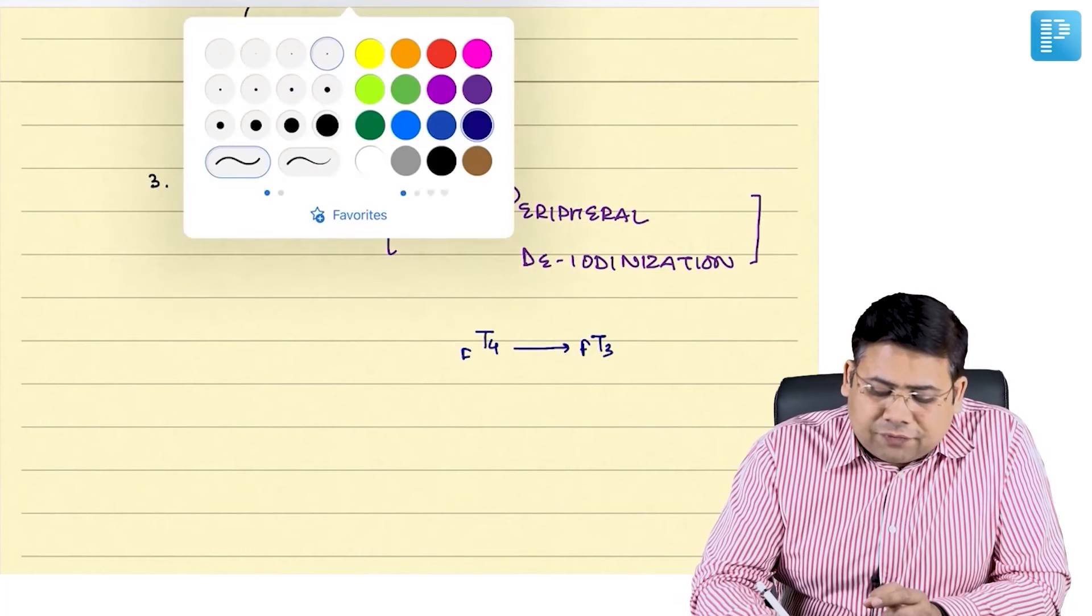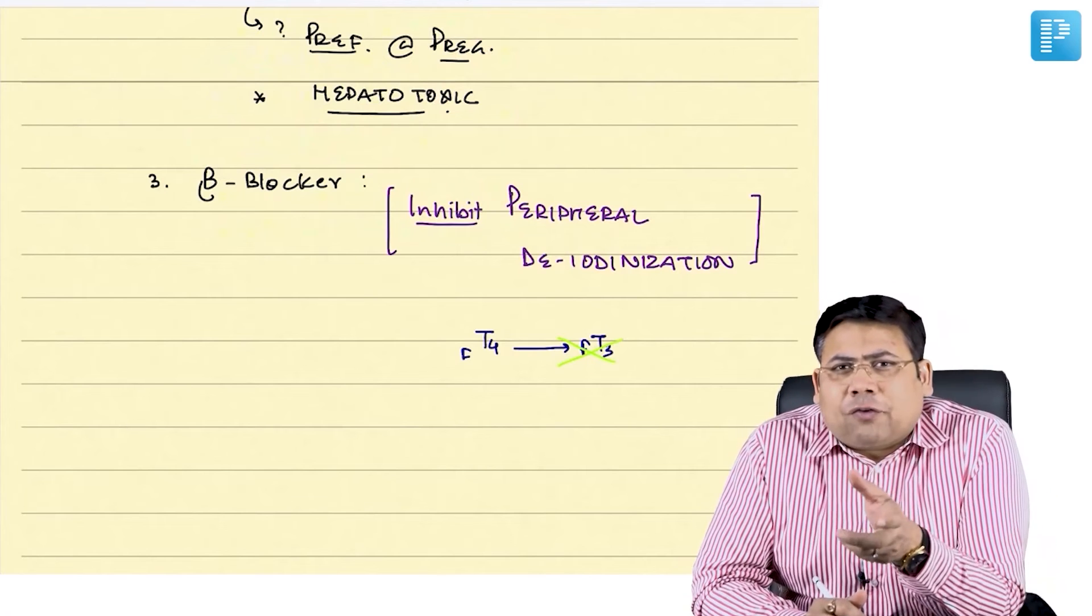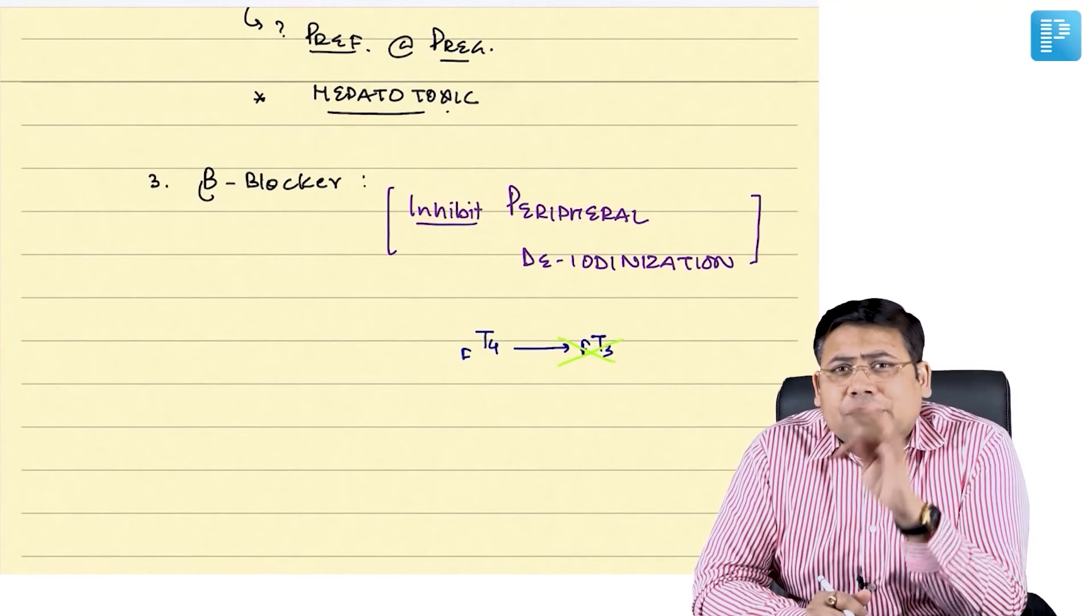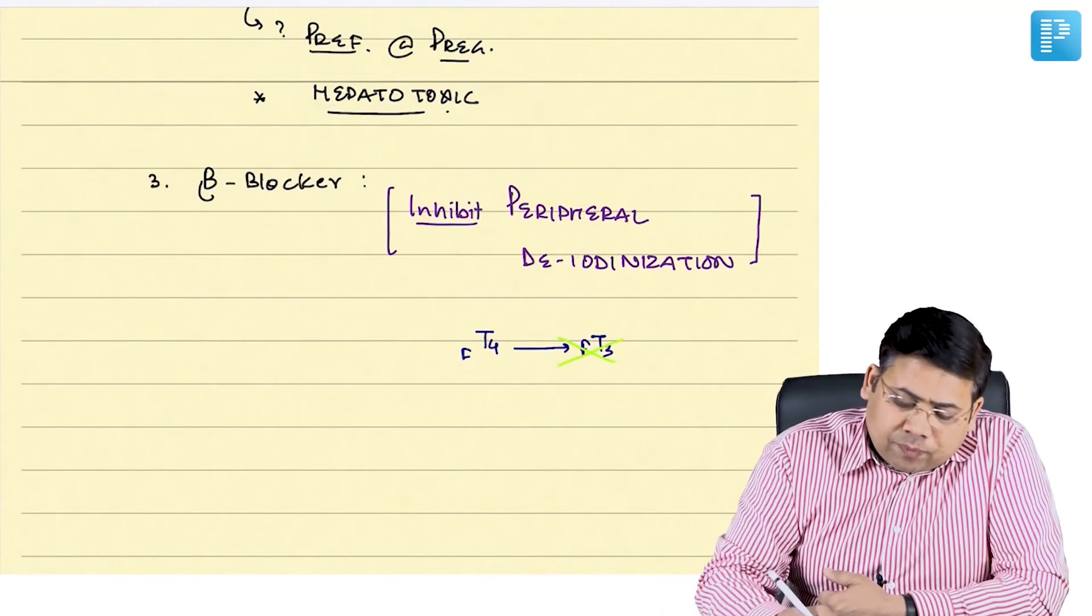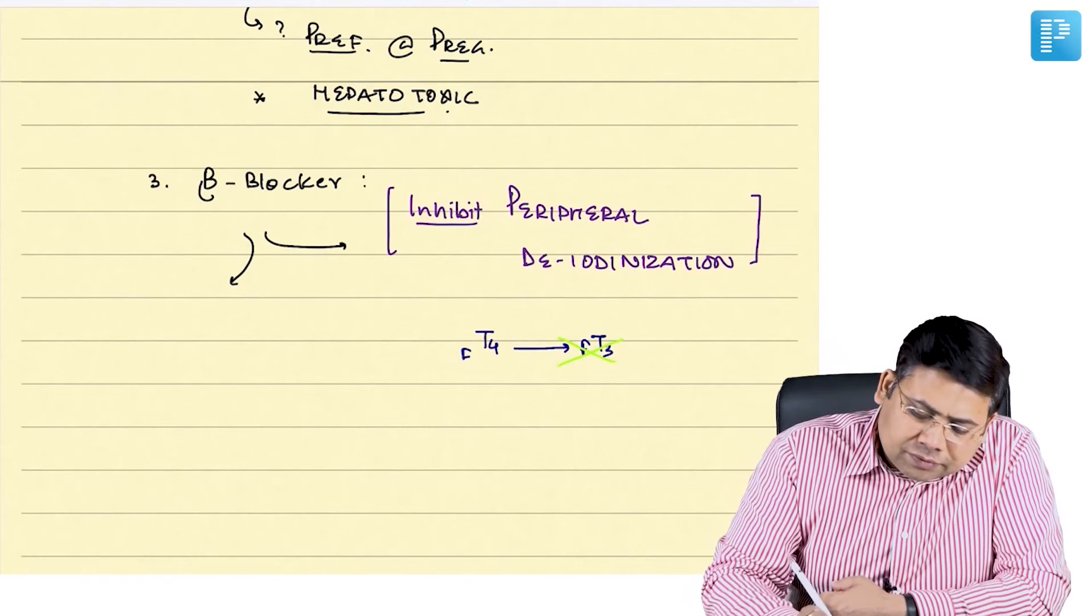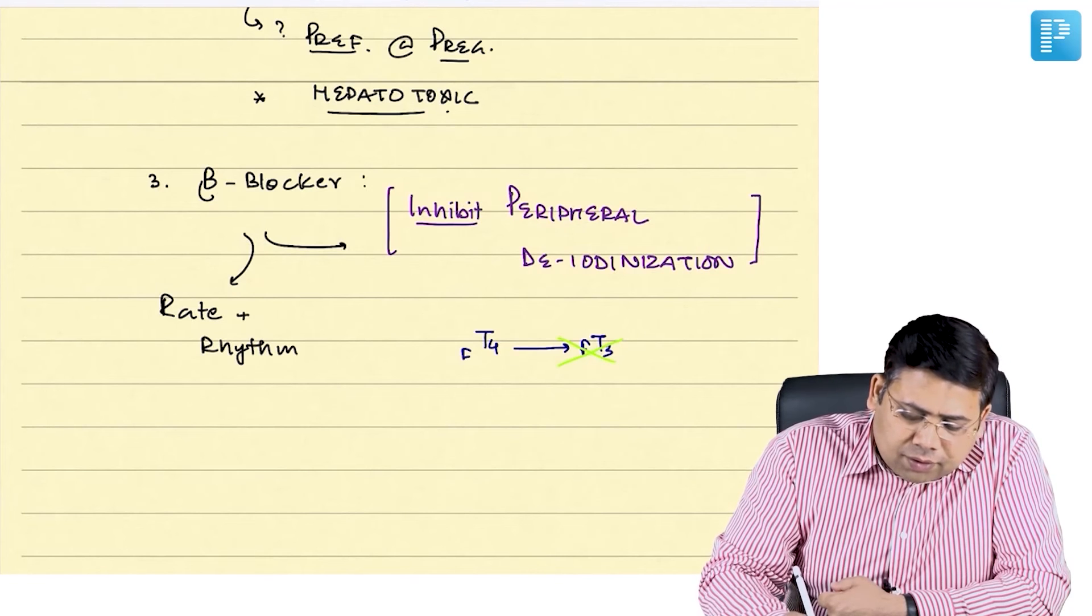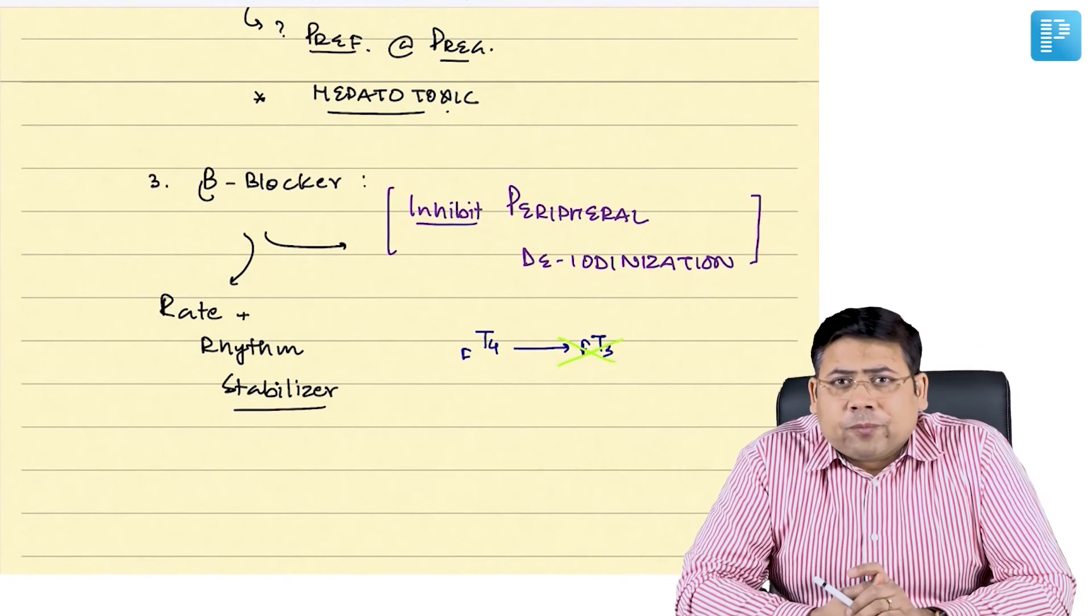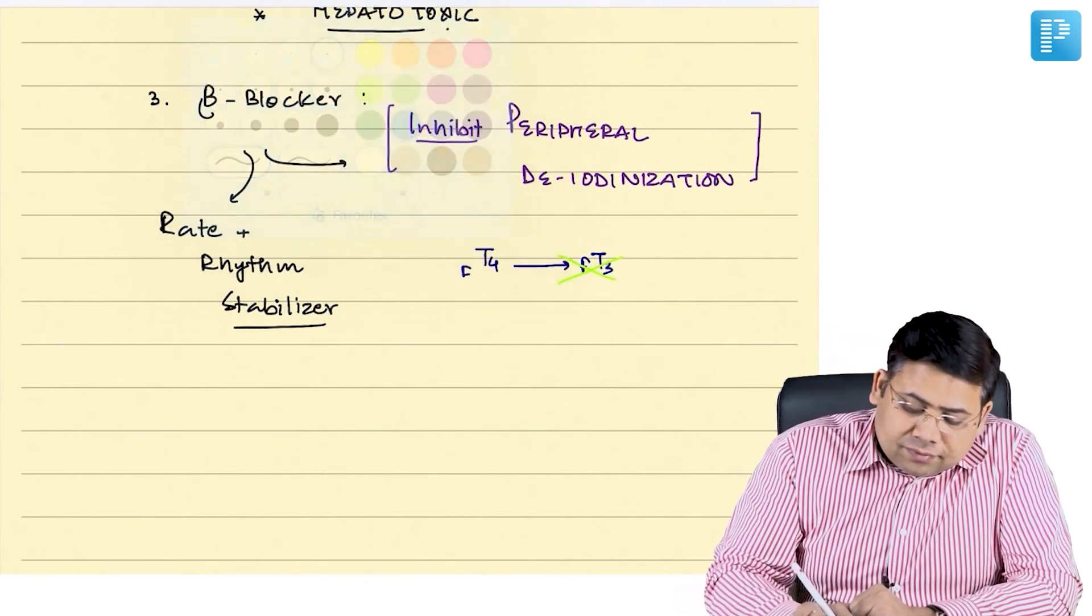So, free T4 to free T3 conversion is blocked and hence the functional effect of T3 that was due to T3 acting on the organs and producing all the thyrotoxic symptoms is neutralized. The second very important thing that is a blessing in disguise, that beta blockers are actually antiarrhythmic agents and therefore they act as rate plus rhythm stabilizer. This is the beauty. This is the first thing. Now, the second question that is often asked is, how do they act?